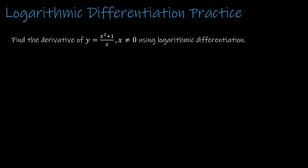Let's do a practice. Press pause, try this question using logarithmic differentiation, and then press play to see how you did. The first thing I would do is take the natural log of everything. So I'm going to write: ln(y) equals the natural log of x squared plus 1 minus the natural log of x — because that was a quotient, so I'm subtracting. Now I take the derivative of everything: y prime over y. The derivative of ln(x squared plus 1) is 1 over (x squared plus 1) times 2x, and the derivative of ln(x) is 1 over x.